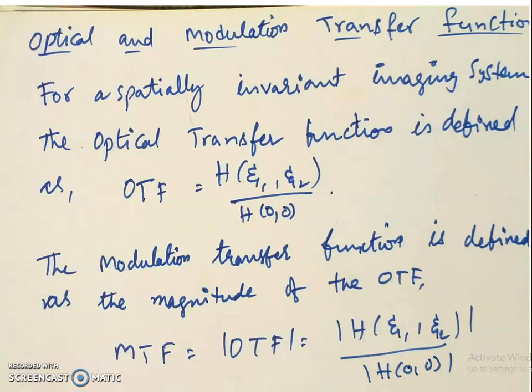The definition for optical transfer function is as follows. For a spatially invariant imaging system, the optical transfer function is defined as: OTF is equal to H of zeta1, zeta2 divided by H of 0, 0, where H of zeta1, zeta2 is the Fourier transform of the impulse response of the system H of m, n. The modulation transfer function is the modulus of the OTF, which is modulus of H of zeta1, zeta2 divided by modulus of H of 0, 0.